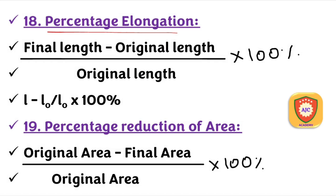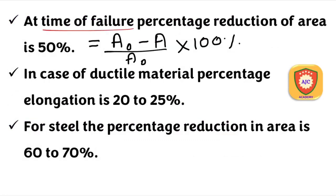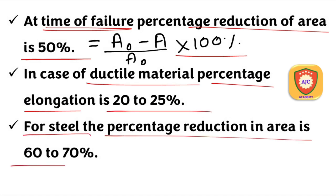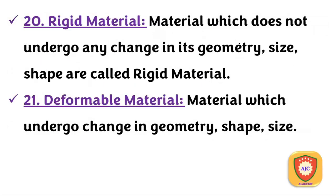Percentage elongation = (Final length − Original length) / Original length × 100%. Percentage reduction of area = (Original area − Final area) / Original area × 100%. If failure occurs, percentage reduction of area is around 50%. For ductile materials, percentage elongation is typically 20–25%.